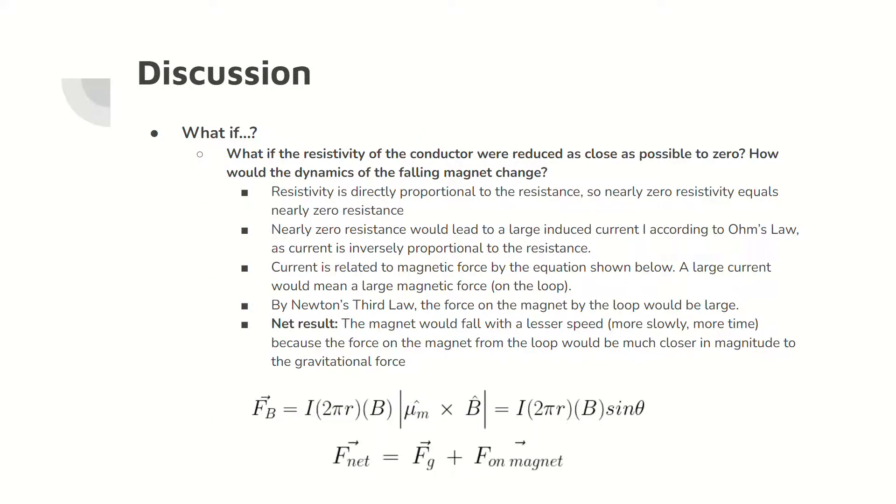If the resistivity decreased to near zero, the resulting resistance of the aluminum foil tube would decrease. As a result, by Ohm's law, the induced current would be much greater. And because the magnetic force depends on current, the magnetic force would increase. By Newton's third law, the force on the magnet would increase, so the magnet would move slower through the tube as the net force on the magnet has a lesser magnitude.